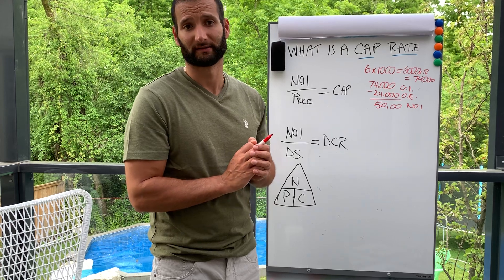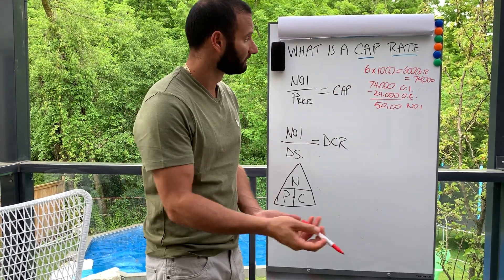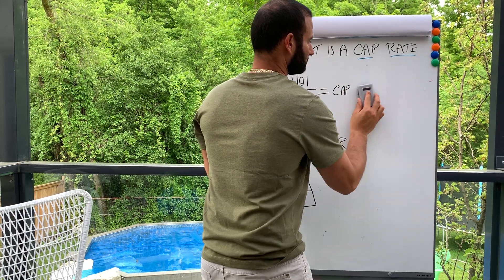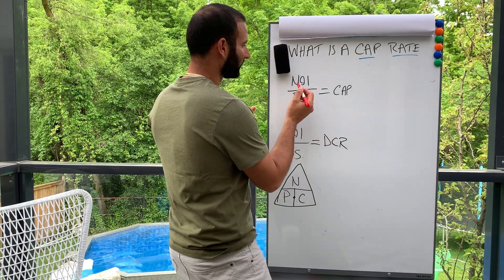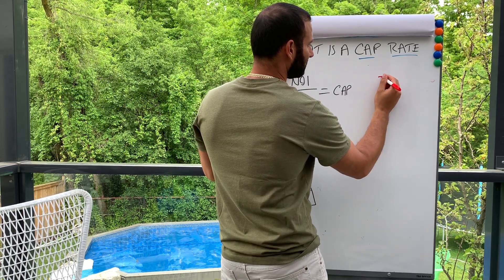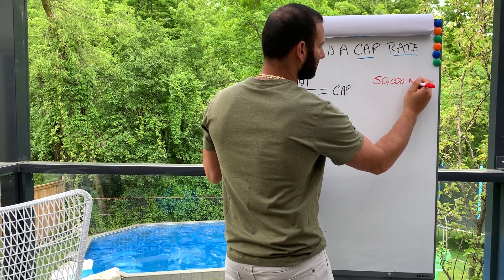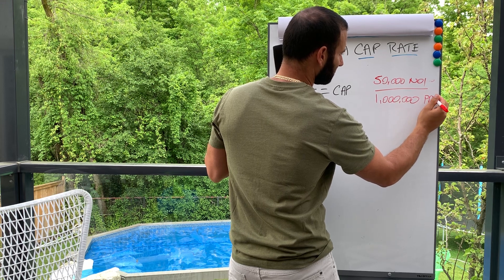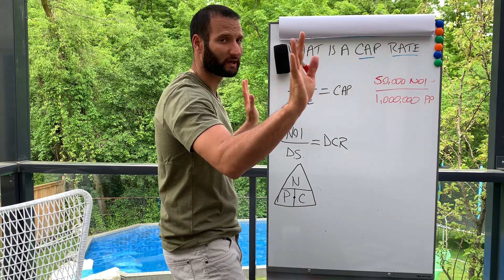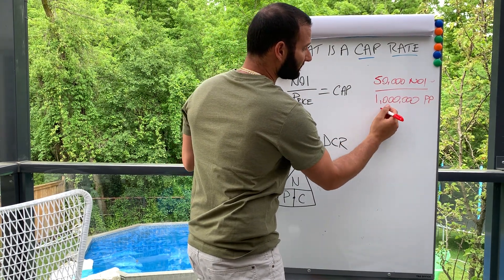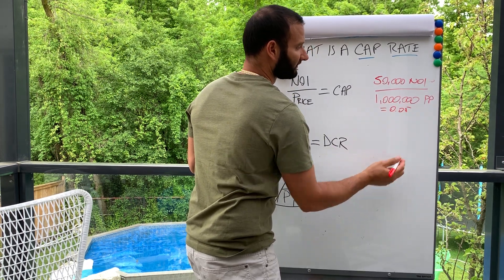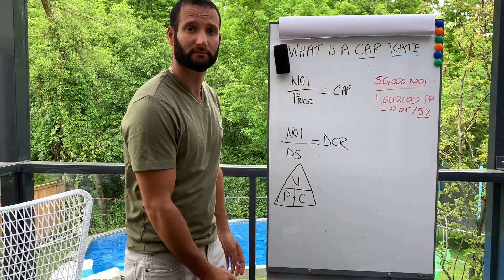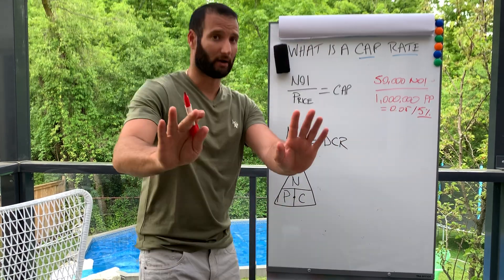Now, the price — what's the price of this six-unit building? Let's say it's a million bucks. We take our NOI of fifty thousand divided by our purchase price of one million. That equals 0.05, or reflected as a percentage: five percent. So the cap rate on this building is five percent.